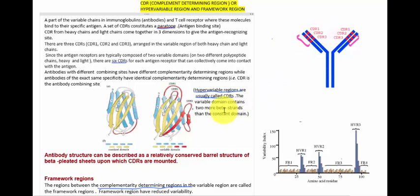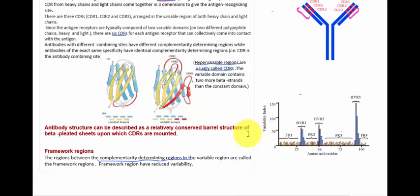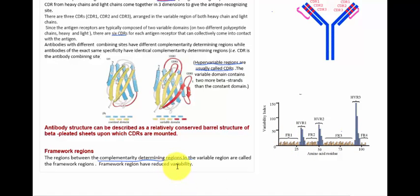The variable domain contains two more beta strands than the constant domain. This is the constant domain and this is the variable domain, and you can see that in the variable domain the red part represents those two extra beta strands compared to the constant domain. Then, what is the framework region? The regions between the complementary determining regions — which have high variability — are called the framework region, and in the framework region the variability is very low.